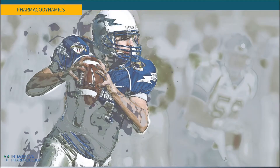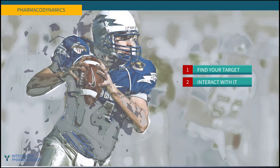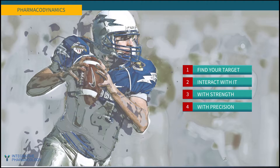There are four parameters that collectively define pharmacodynamics — these are principles that determine how a medicinal agent will affect the body. First, finding the target: how does the compound get to and interact with its target? Second, interacting with that target — inhibiting it or activating it. Third, doing so with strength: if you're too weak you won't be effective; if you're too strong you might be toxic. And fourth, precision: hit that target and try not to hit anything else.